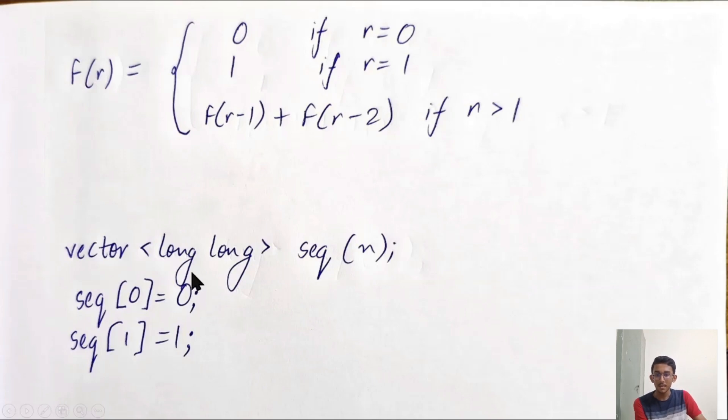Then I've defined the predefined terms here. Next, I must apply this formula f(r) equal to f(r-1) plus f(r-2) for all r's from 2 to n minus 1. For that, I must use a for loop.